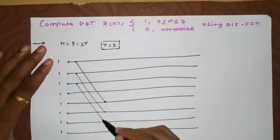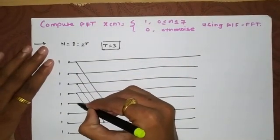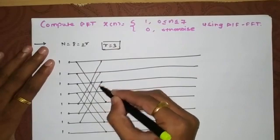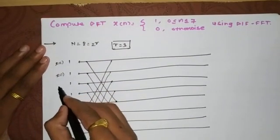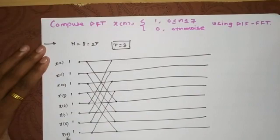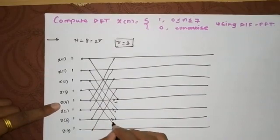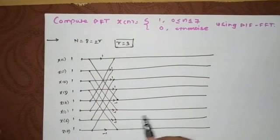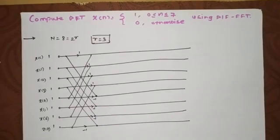Now we'll map the samples: X0 with X4, then X1 with X5, X2 with X6, and X3 with X7. Writing these out — X0, X1, X2, X3 on top and X4, X5, X6, X7 below — this gives us the first stage of decimation. The downward connections are multiplied with minus 1, and the upward connections are plus 1.